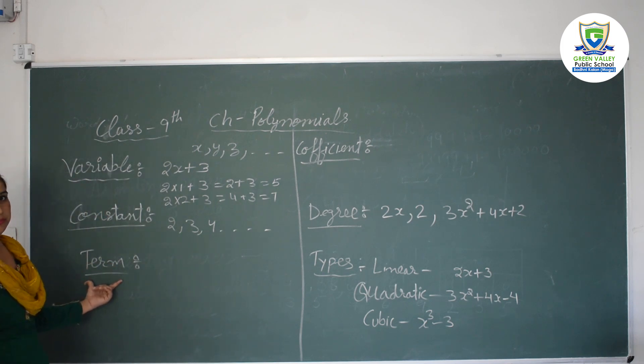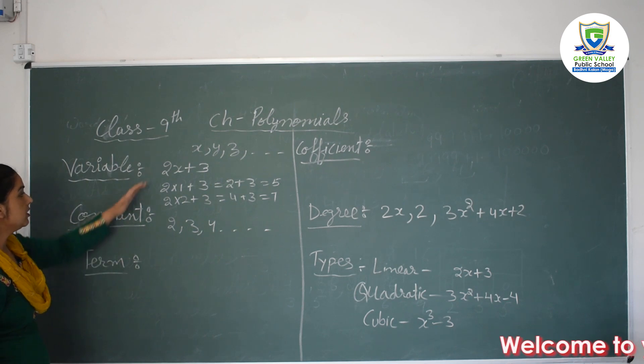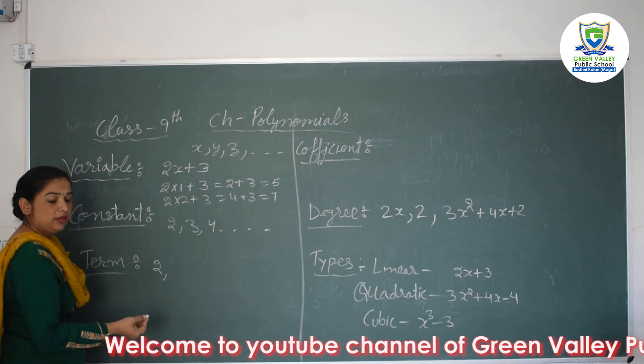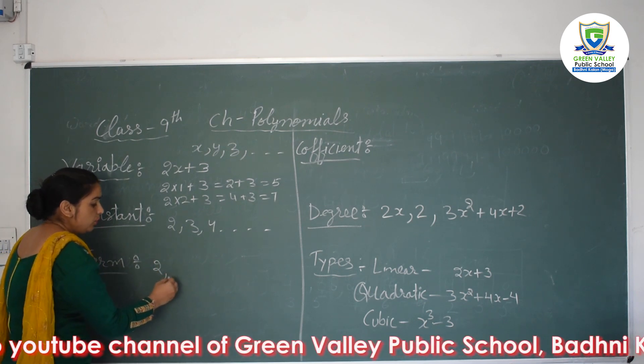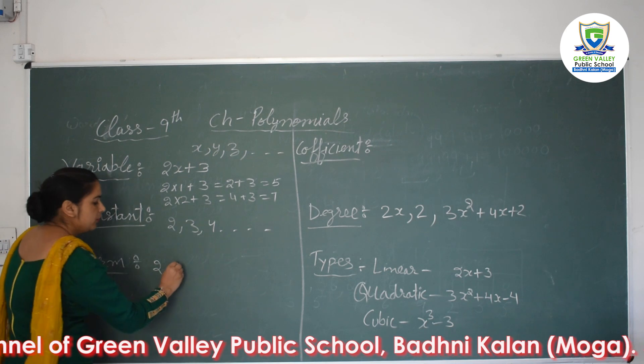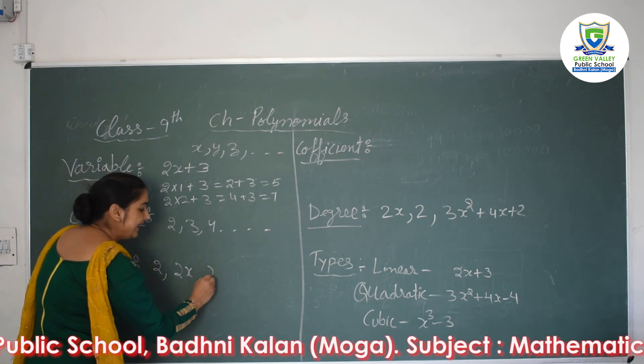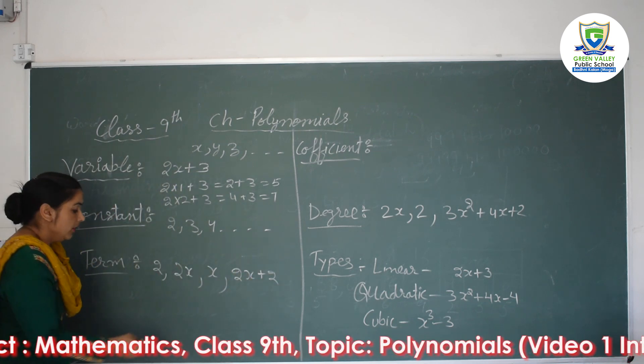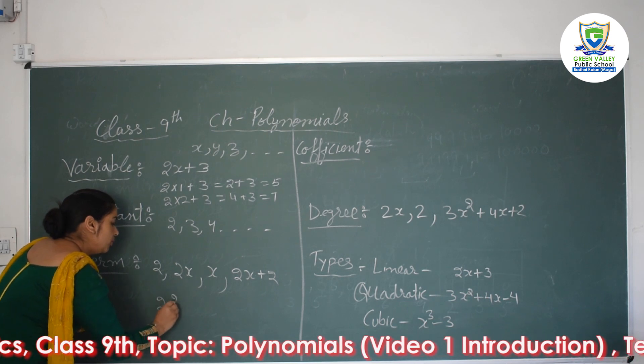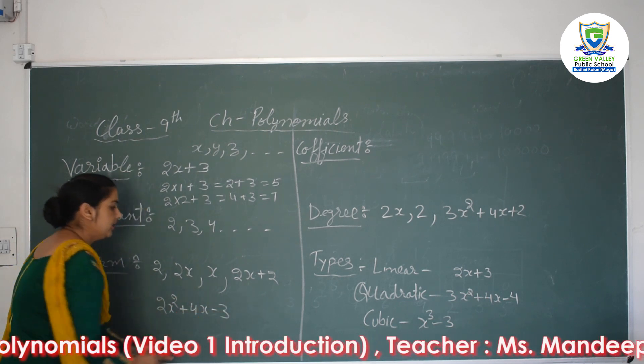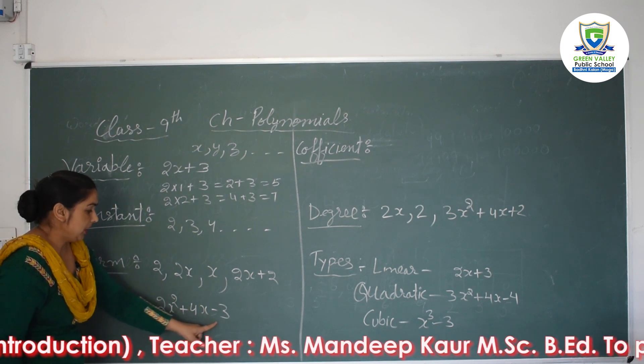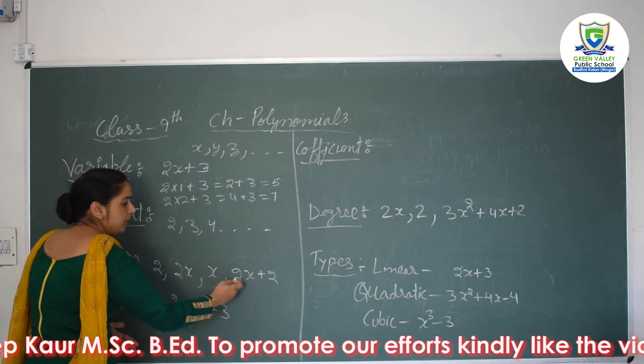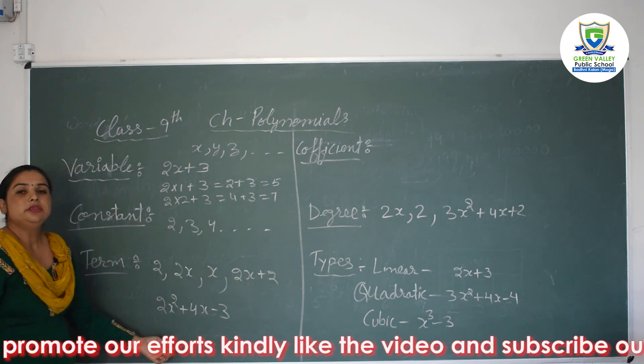And what is term? Next is term. Term is the combination of variable and constant, or alone variable and constant. Like here 2 is also a term. 2x, that is also a term. Only x is also a term. If I can combine 2x plus 2, that is also a term. And if I can make 2x² + 4x - 3, that is also a term. Means they are forming polynomial. These are single terms. In this, two terms. In this we have three terms.